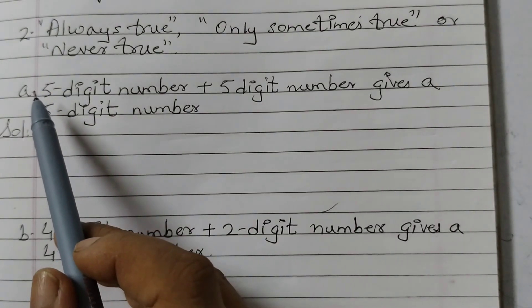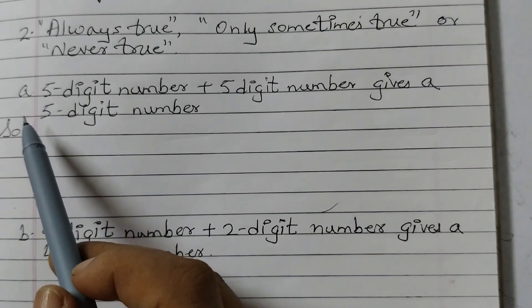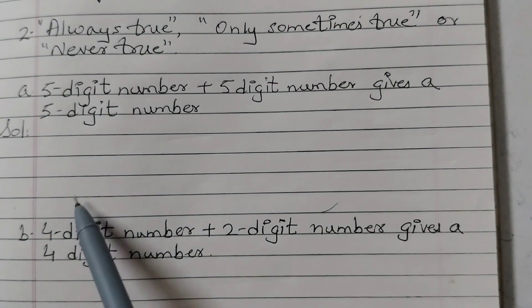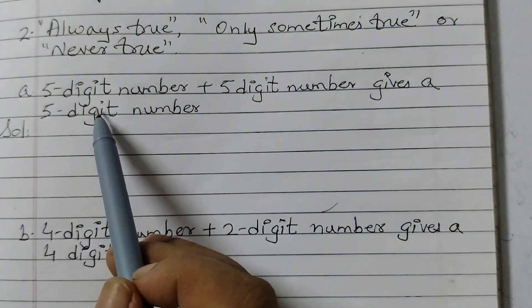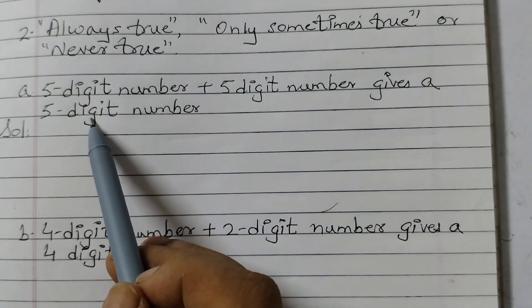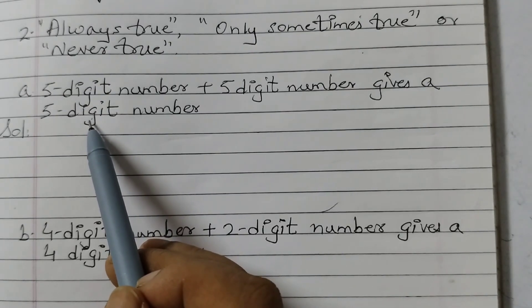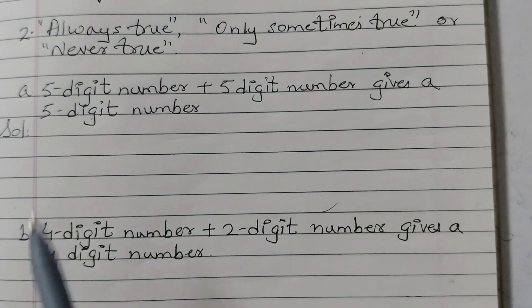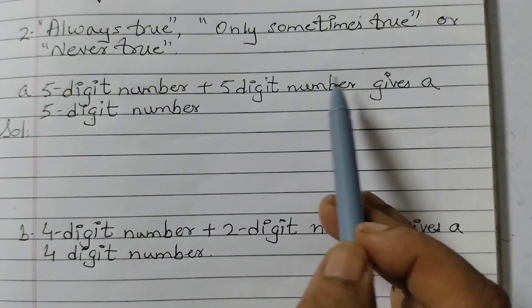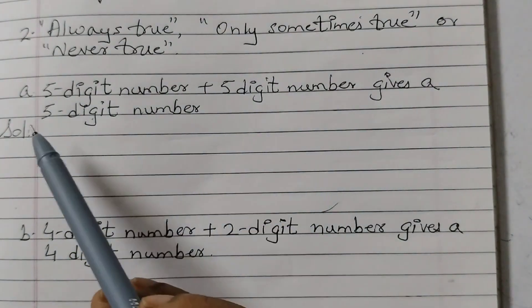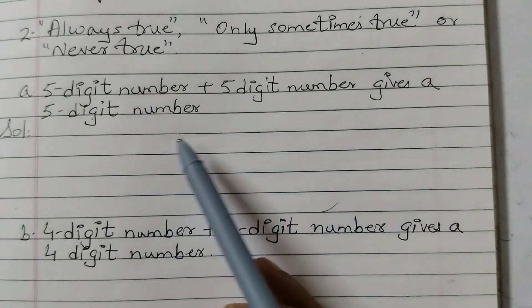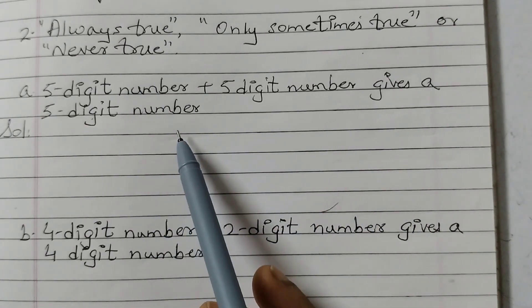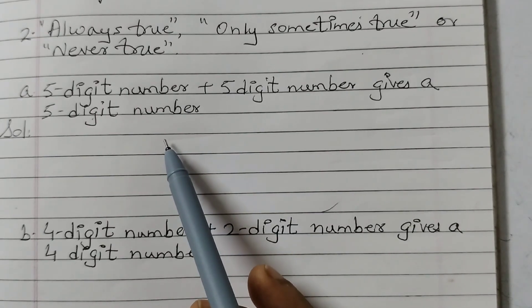Question number two: Below are some statements — think, explore and find out if each statement is always true, only sometimes true, or never true. Why do you think so? Write your reasoning and discuss with the class. We have five statements. First: five digit number plus five digit number gives a five digit number. Is this always, sometimes, or never true?